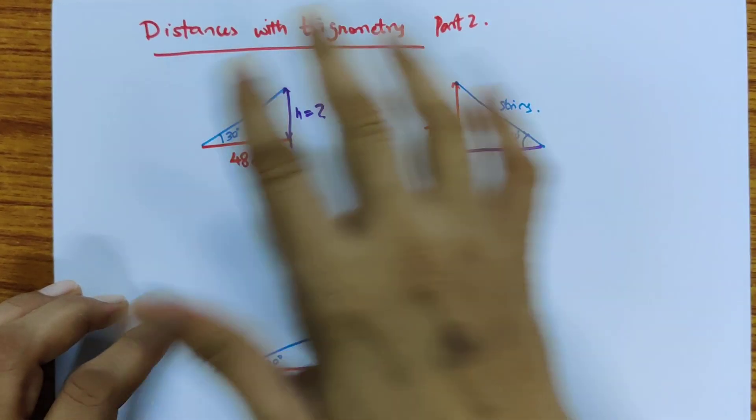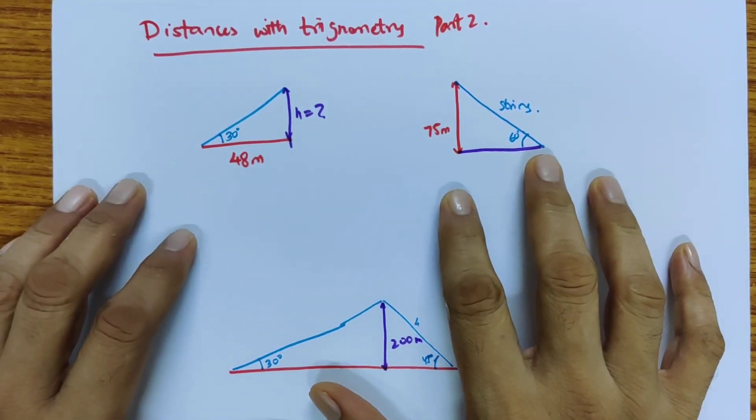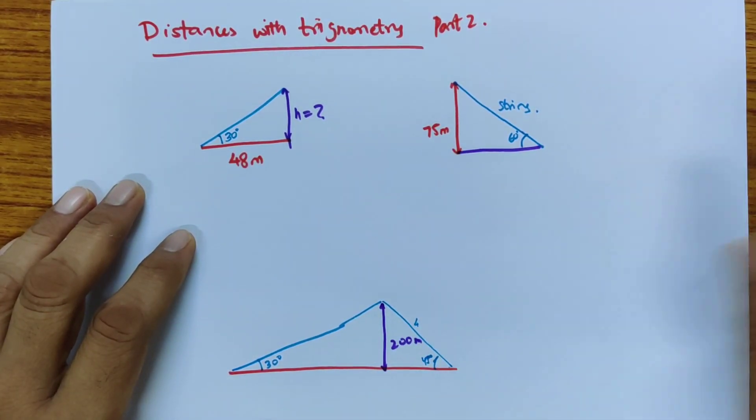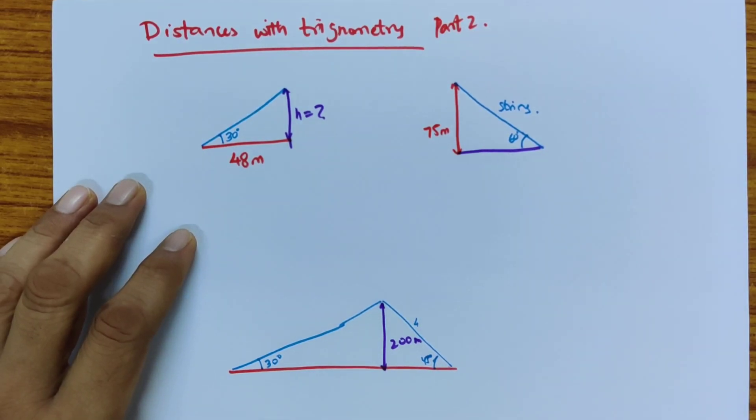Here we look at using trigonometry for distances, especially for tenth grade. This is part 2. As I said, mostly there are two triangles that are used and it's just a matter of being able to compare those triangles.